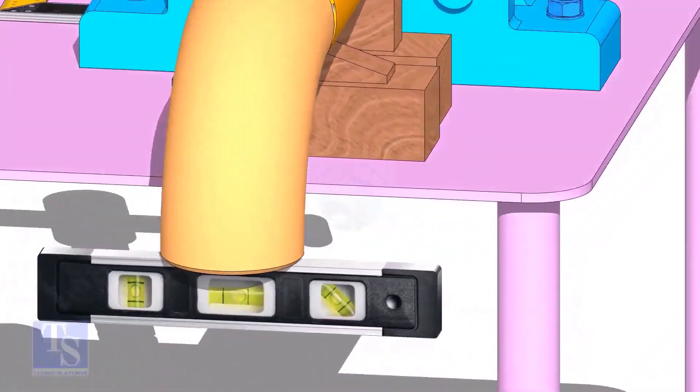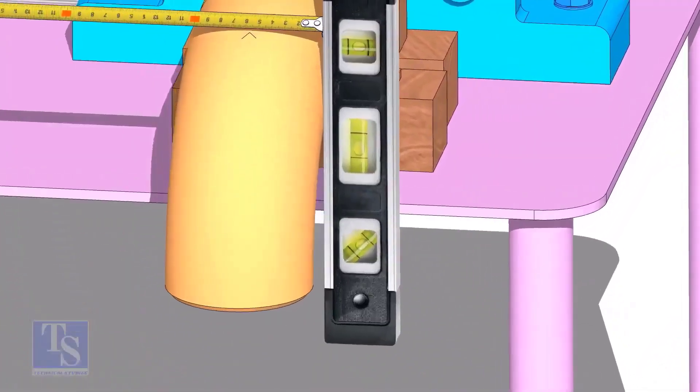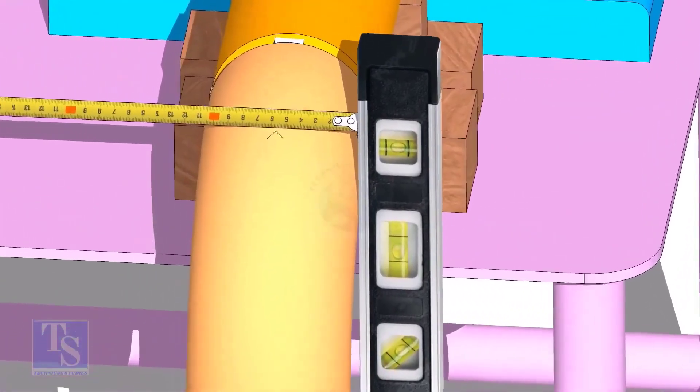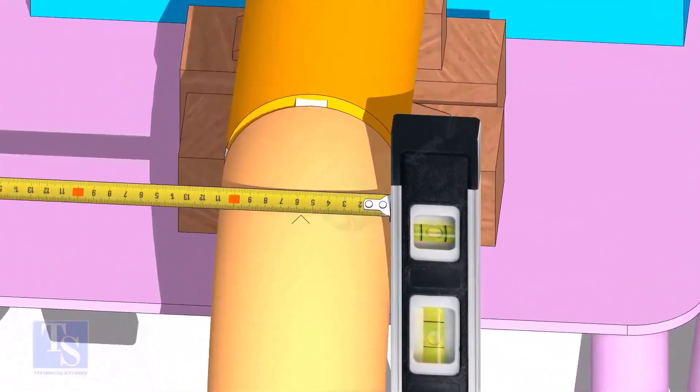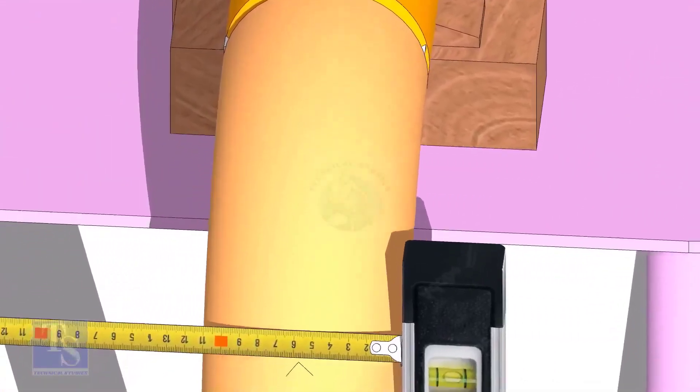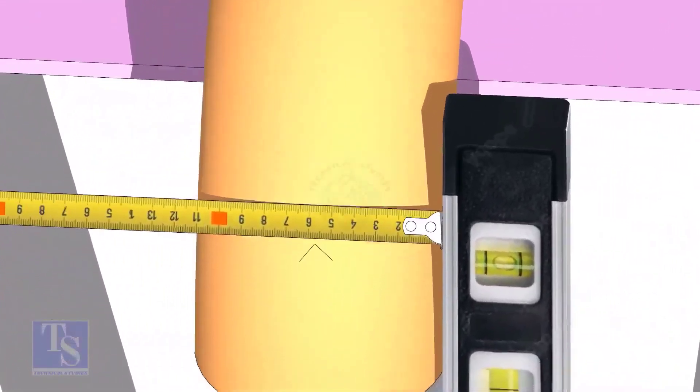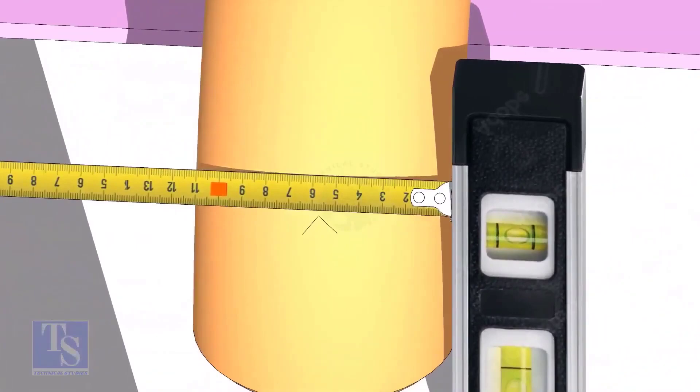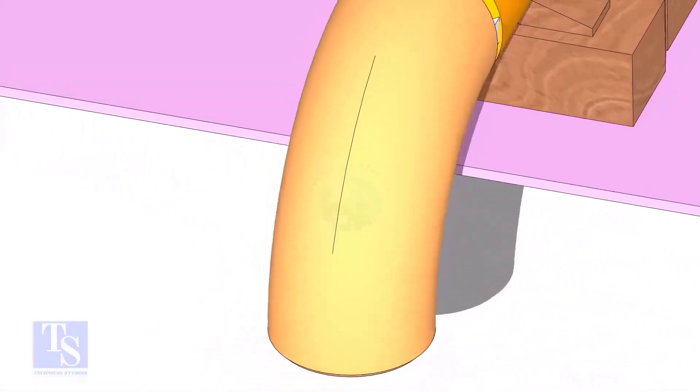Mark the center line of the elbow. OD of a four inch pipe is 114mm. Hold a level bottle at the side of the elbow vertically and mark 57mm on the elbow at least three locations as shown. Draw a line connecting these marks.